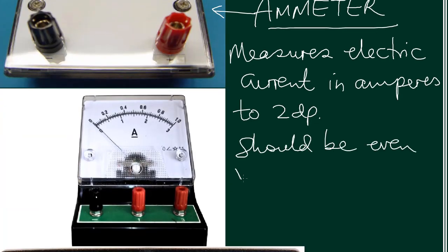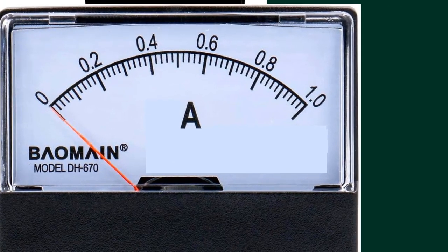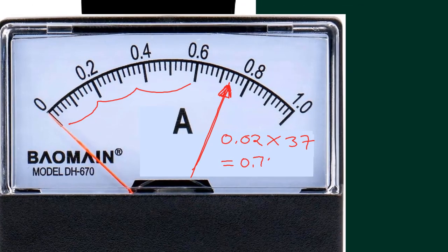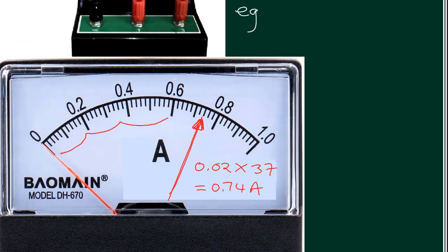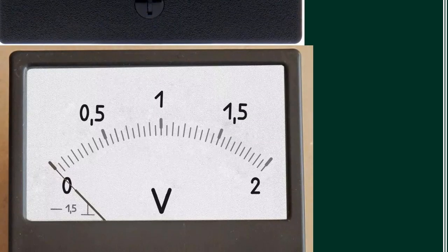For example, if you look at this, let me draw here and show that we have maybe a reading. So if we were to take it, you count your 37 divisions, multiply by 0.02, you end up with 0.74 amperes. That is an ammeter, 0.74 amperes.